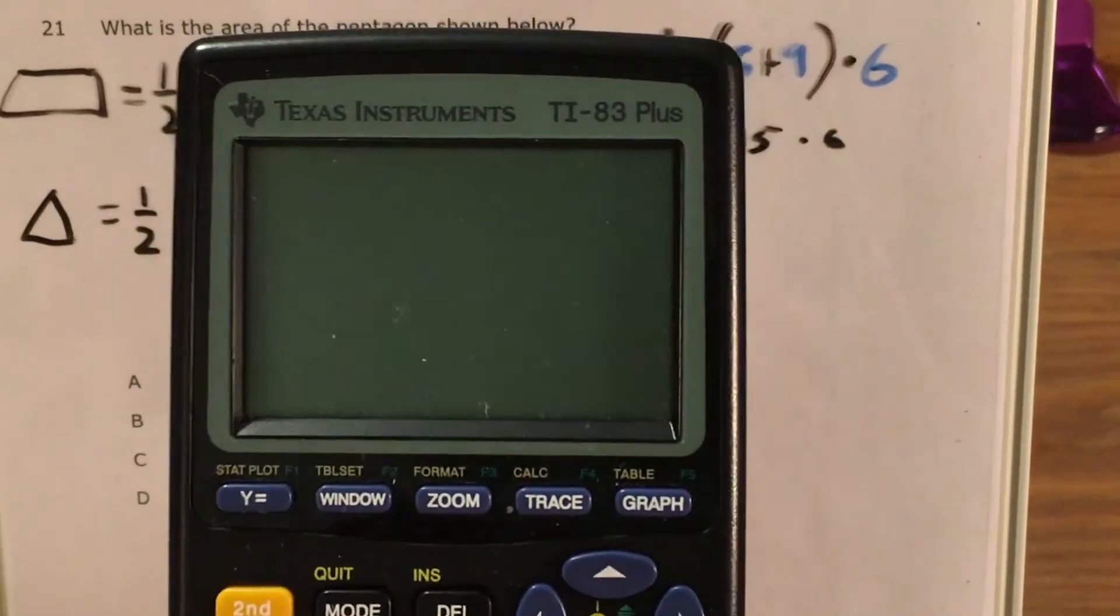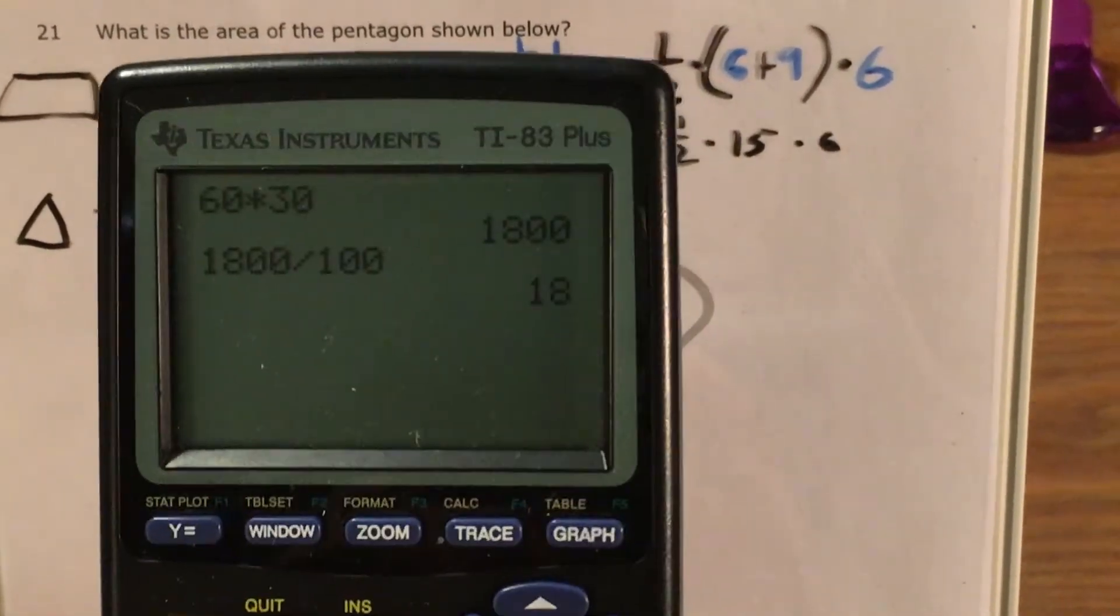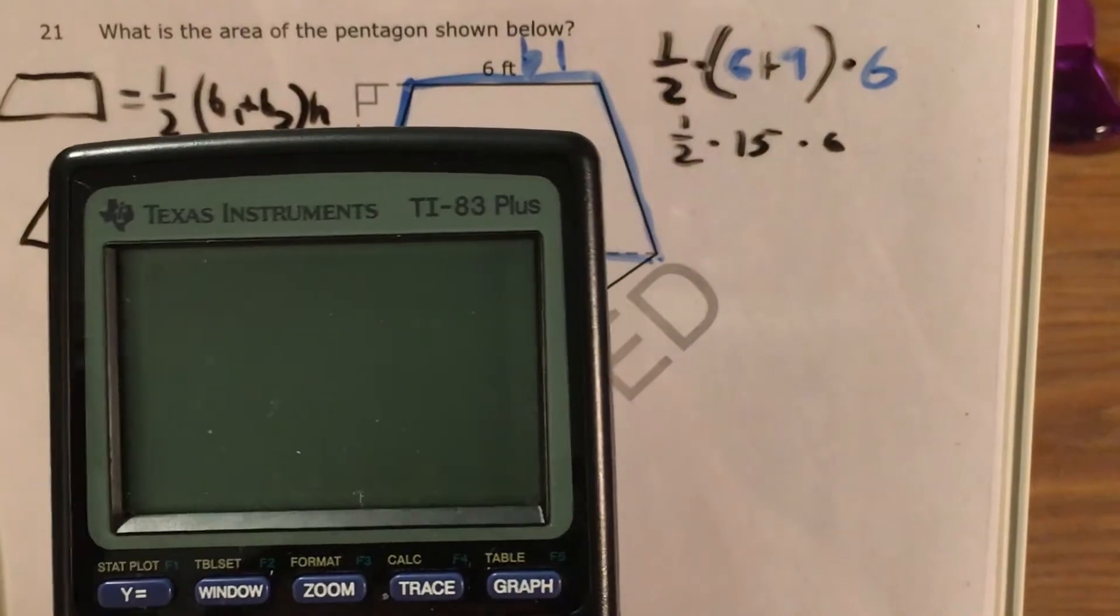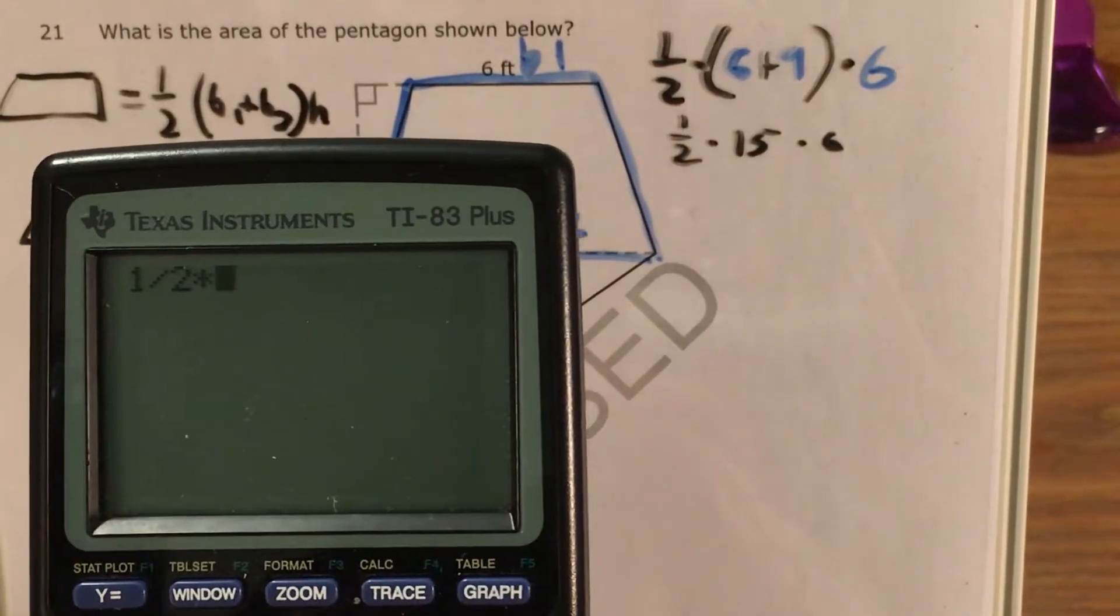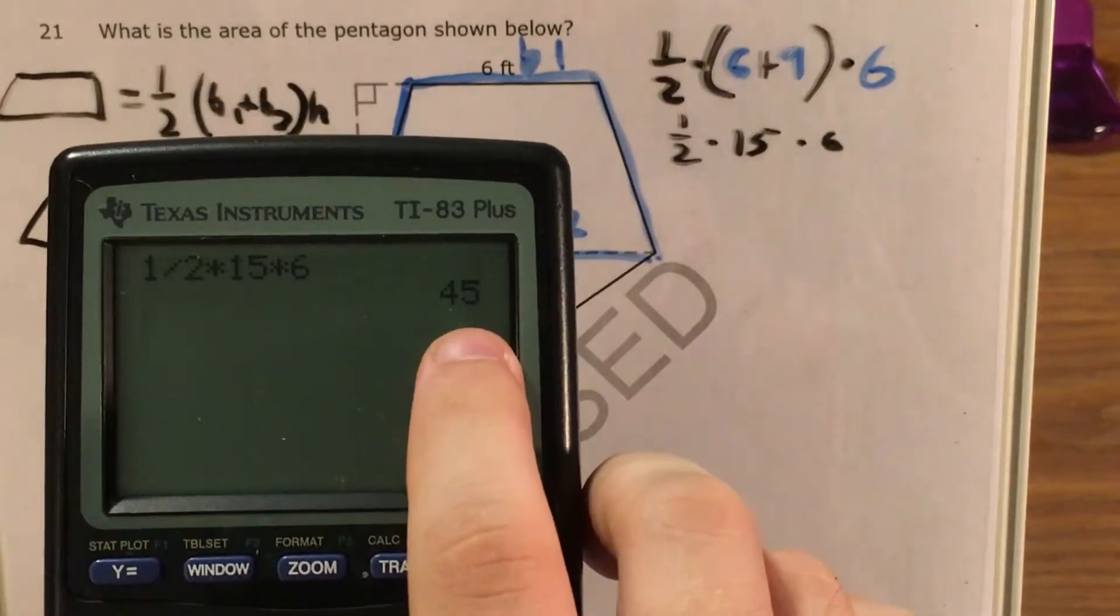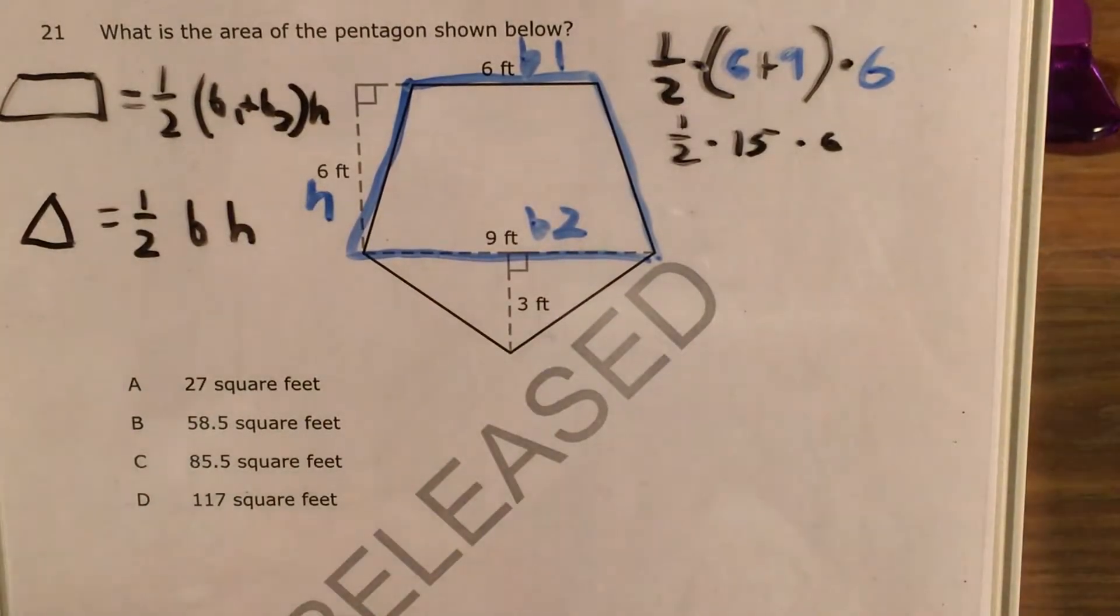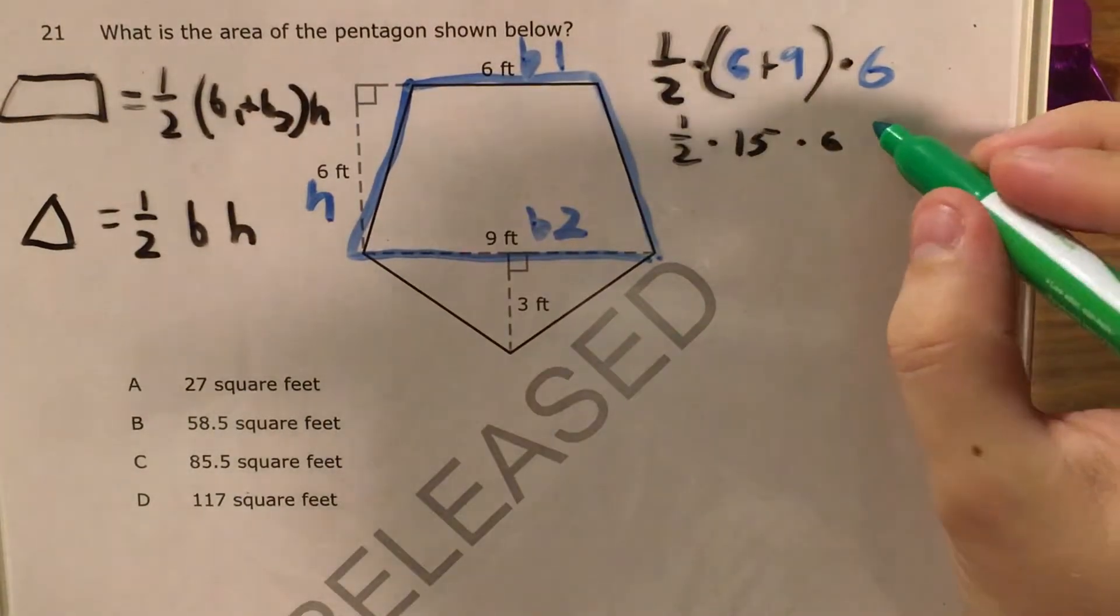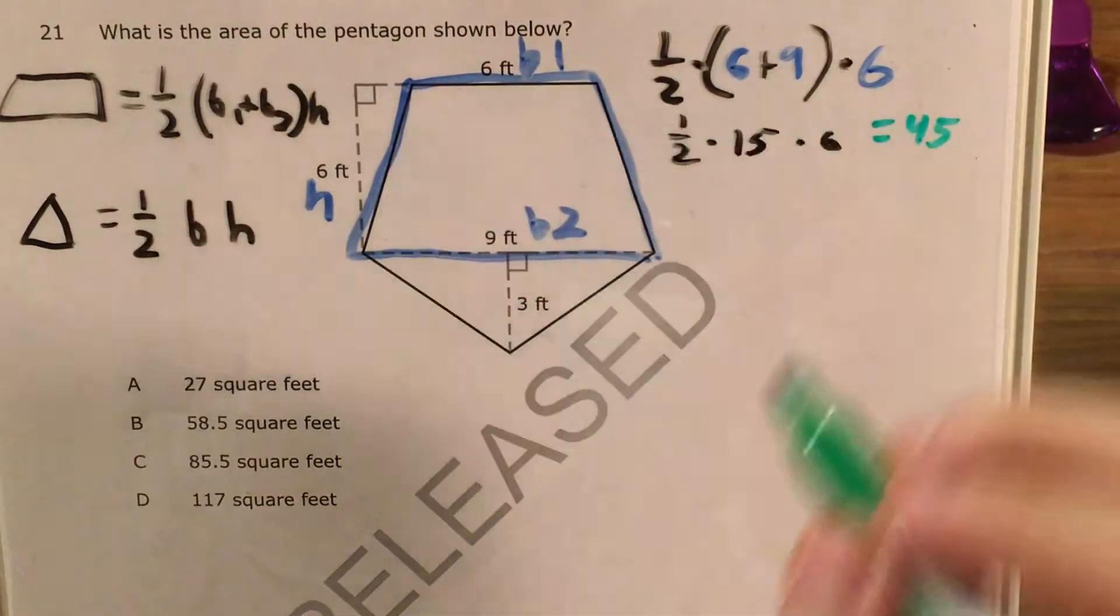Whoops, bumped the thing there. Would probably help with the calculator on as well. This is one-half times fifteen times six gives me forty-five. So I know that the area of my trapezoid is forty-five.